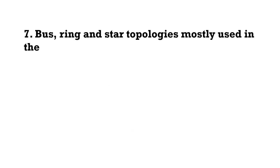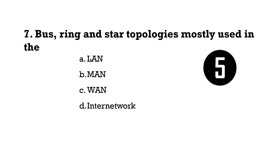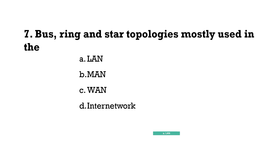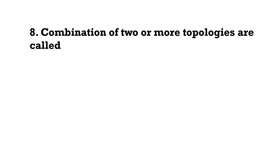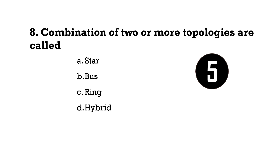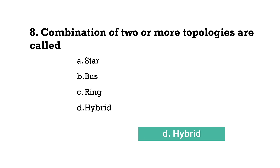Bus, ring, and star topology are mostly used in local area networks. The answer for the next question about a combination of multiple topologies is hybrid topology.